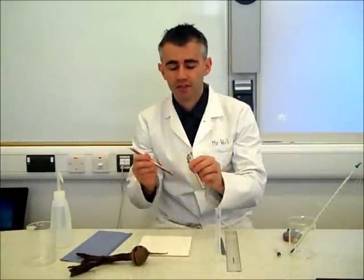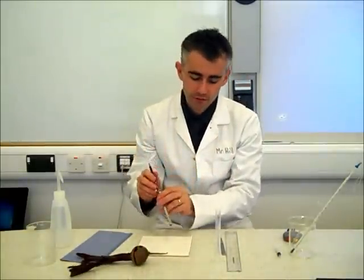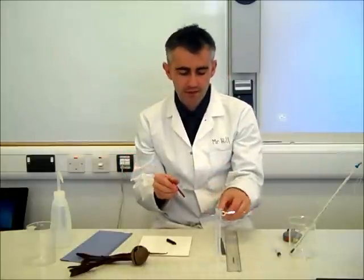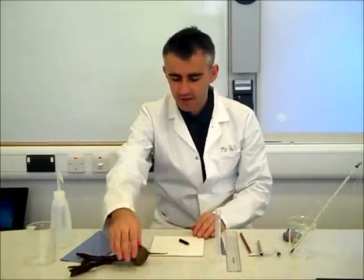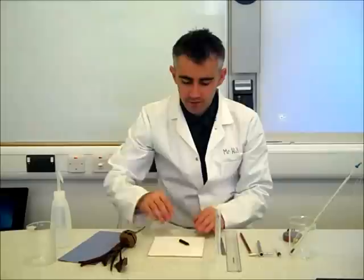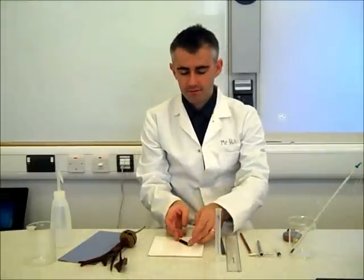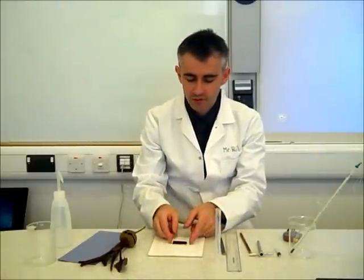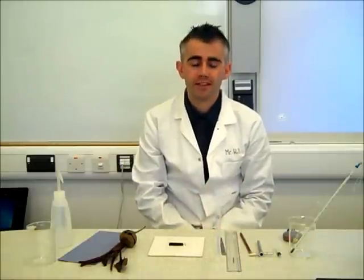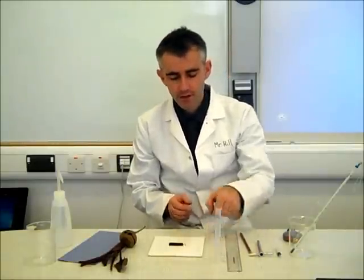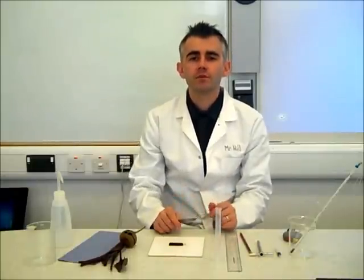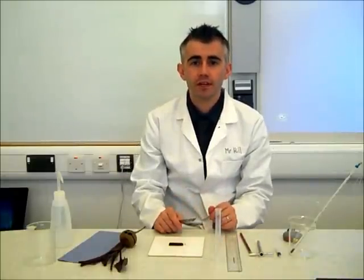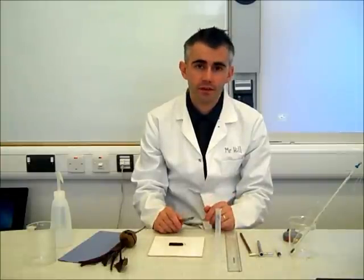It gets stuck in the corer, so you'll need to push it out with a pencil. There is my section of beetroot from the corer. You can see already there is some red pigment that has come from the cutting process itself. I'm going to show you how to set this up at one temperature — it's the same process for all the other temperatures.